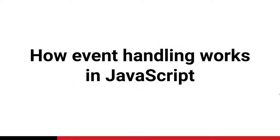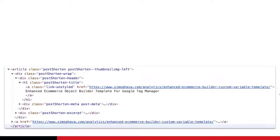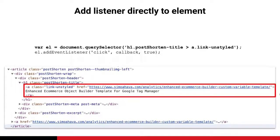GTM is a JavaScript library, so it leverages the same browser APIs that any other JavaScript library would. JavaScript offers a couple of ways to attach listeners to the page or to individual elements on the page. These listeners will literally listen for mouse or keyboard interactions and signal the browser that something happened. You can use that signal as a callback to let GTM know via a data layer push that the user has made an interaction.